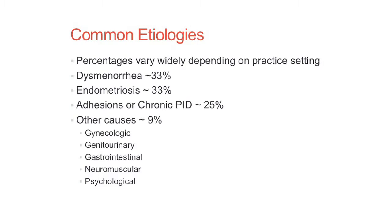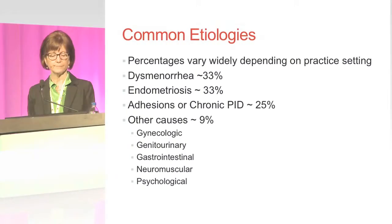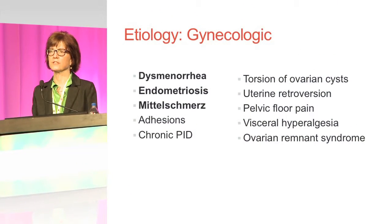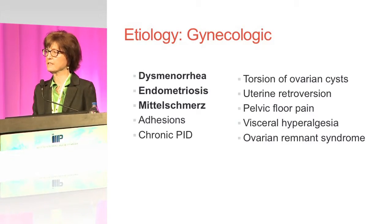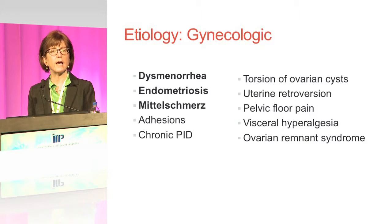In those who are sexually active, it can occur secondary to chronic pelvic inflammatory disease. Other causes include other gynecologic issues, from the genitourinary tract, the GI tract, neuromuscular or psychological origins. The most common causes of chronic pelvic pain in the adolescent patient include dysmenorrhea, endometriosis, and mittelschmerz — the pain that occurs at the time of ovulation in the middle of the cycle. Other less common causes include adhesions, torsion, chronic PID, retroversion, pelvic floor pain, visceral hyperalgesia, and ovarian remnant syndrome.